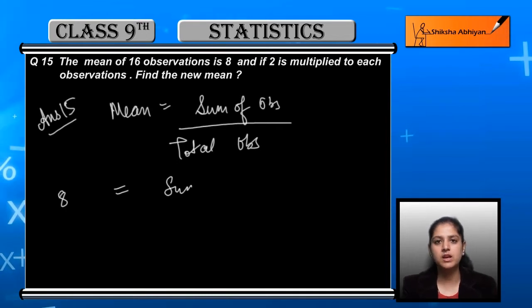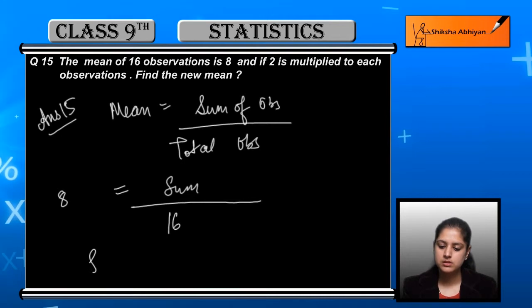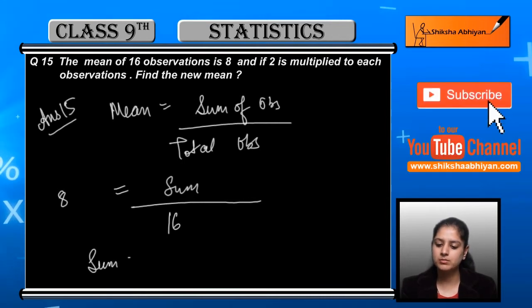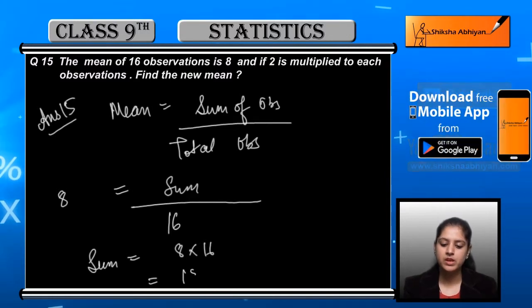The sum is unknown but the total is 16, so the initial sum is 16 multiplied by 8, which equals 128.